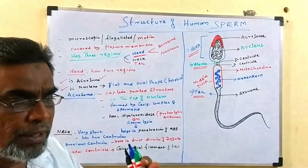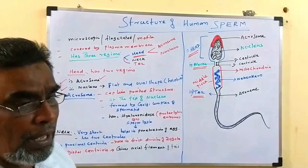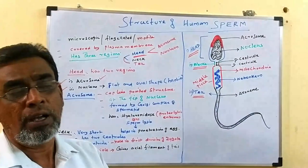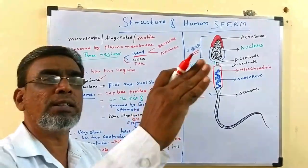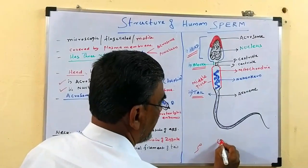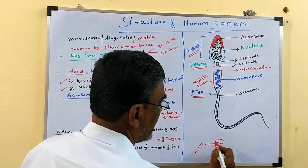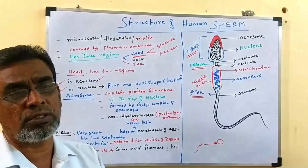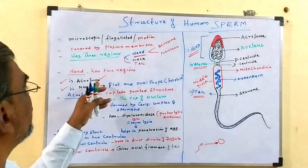Acrosome is the most important and significant structure of the sperm. This acrosome has a significant role in the penetration of the egg during fertilization. The sperm will swim towards the egg and reach it. Penetration is the most important process — penetration inside the egg — and this is possible only because of the acrosome.